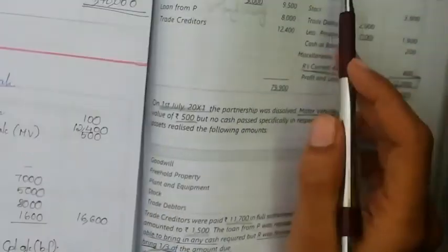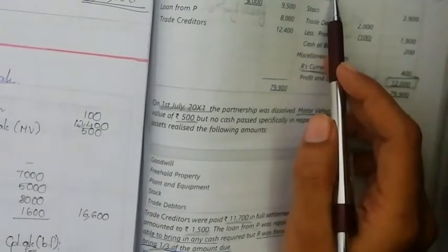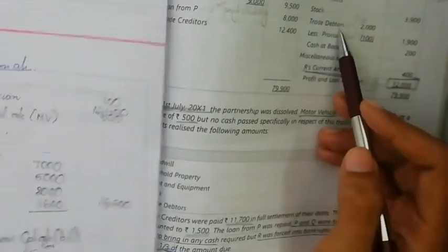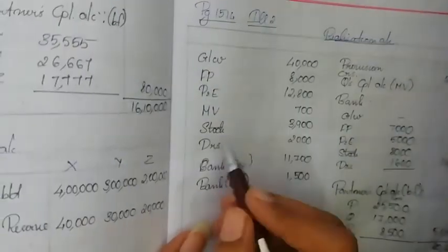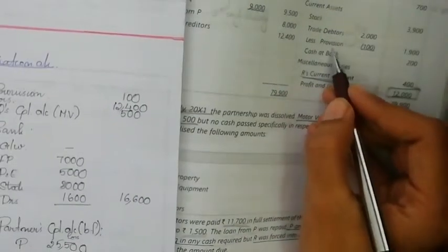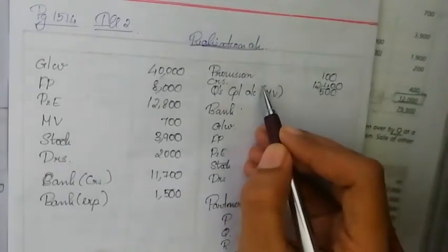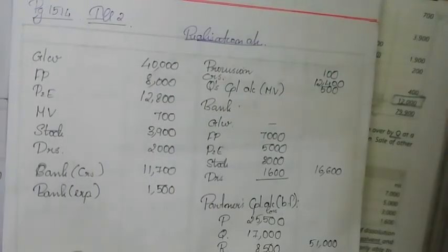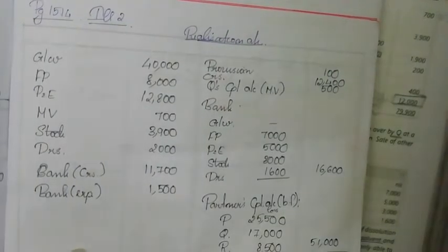Assets transferred include: freehold property, plant and equipment, motor vehicle, stock, and trade debtors — these are the fixed assets and current assets. The provision for doubtful debtors is on the credit side of assets. The assets are closed and transferred to the realization account — debit the realization account, credit each asset account.